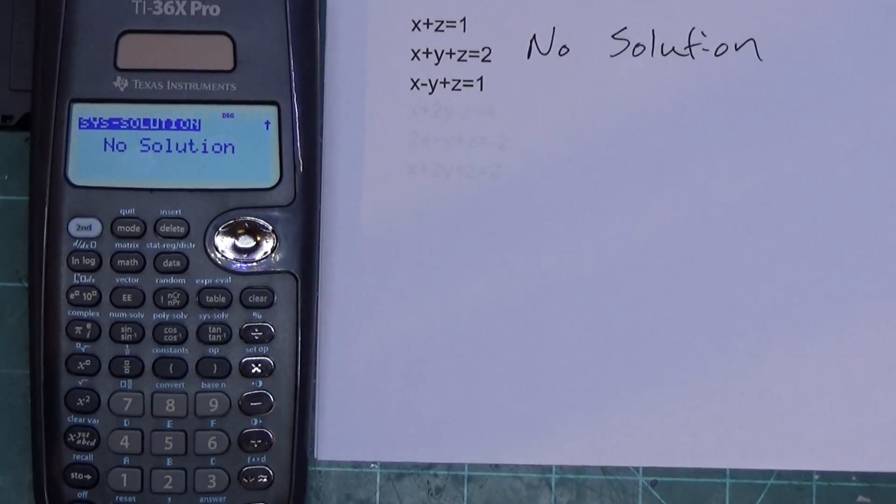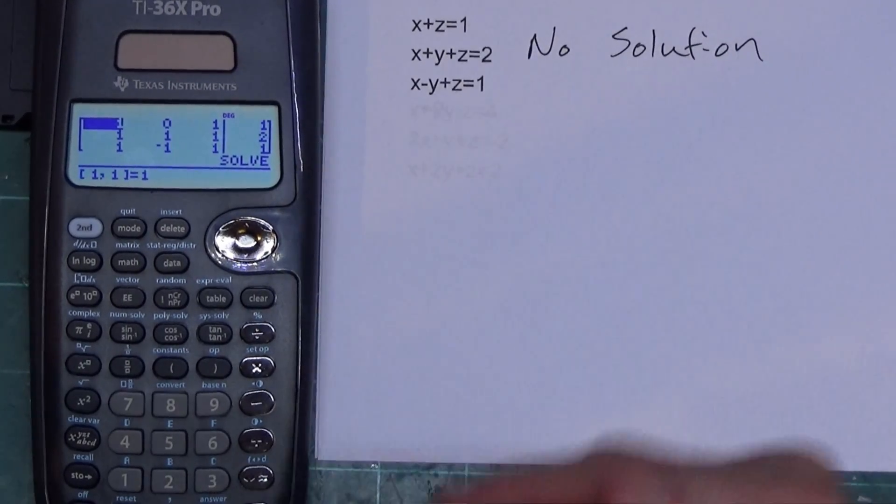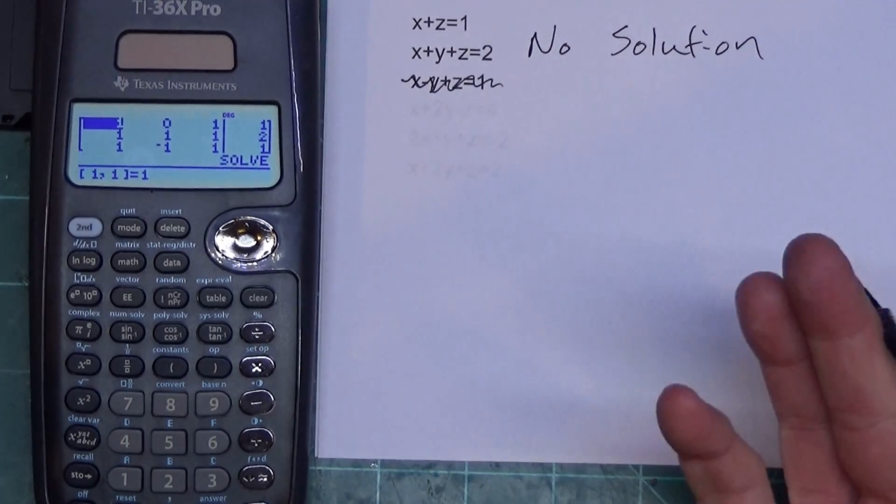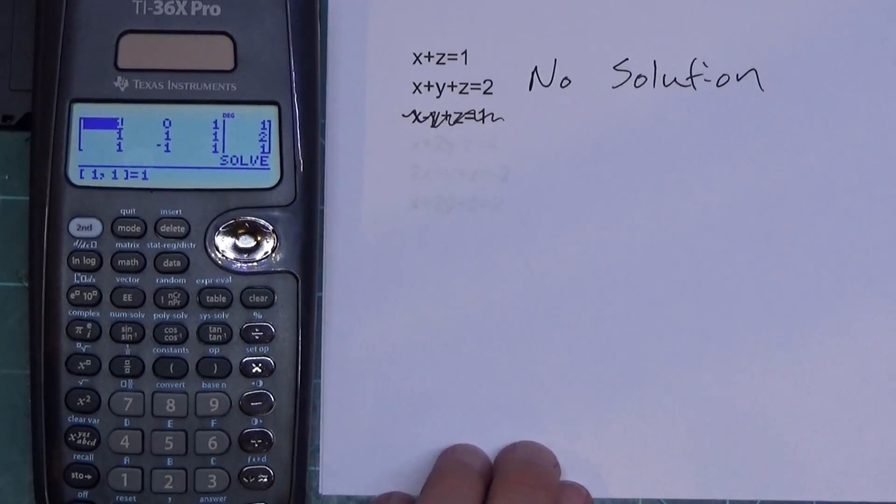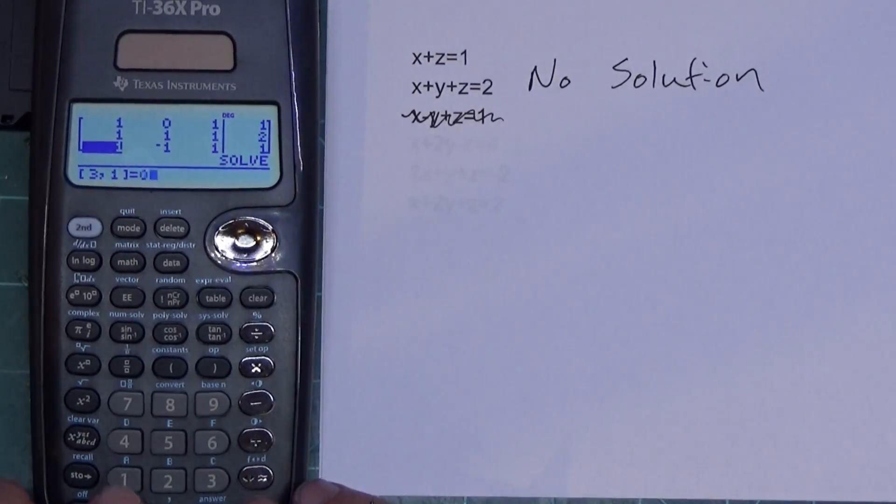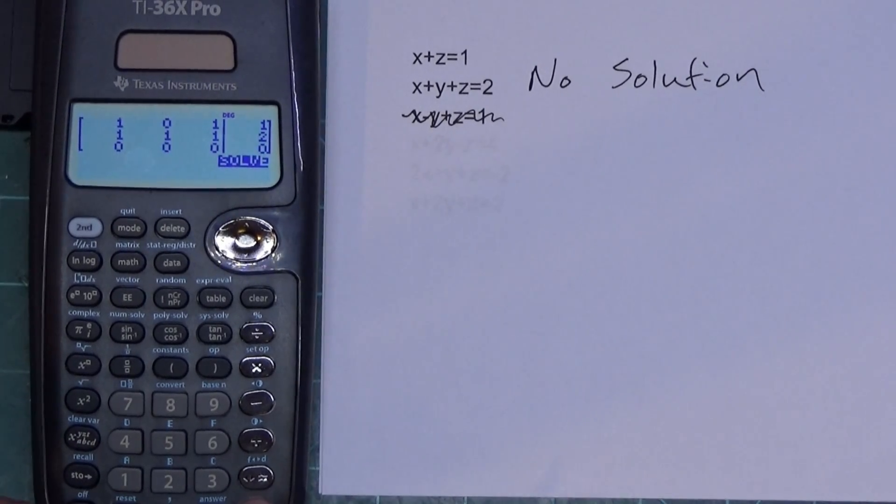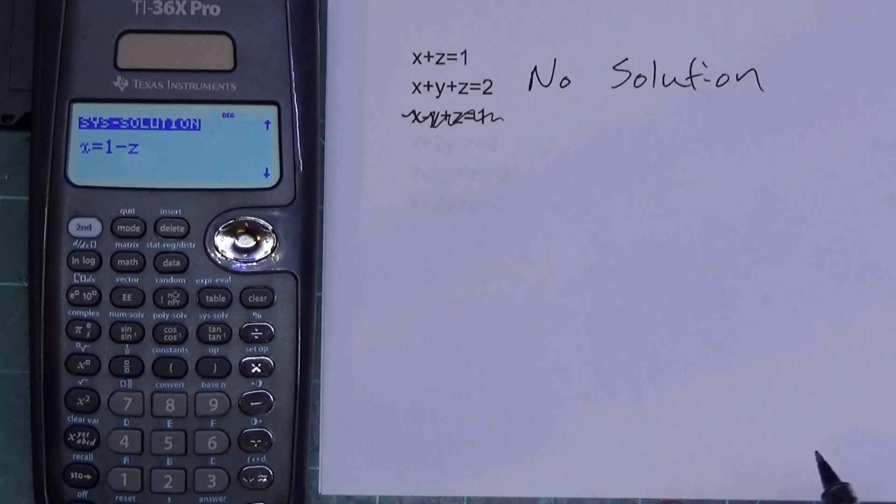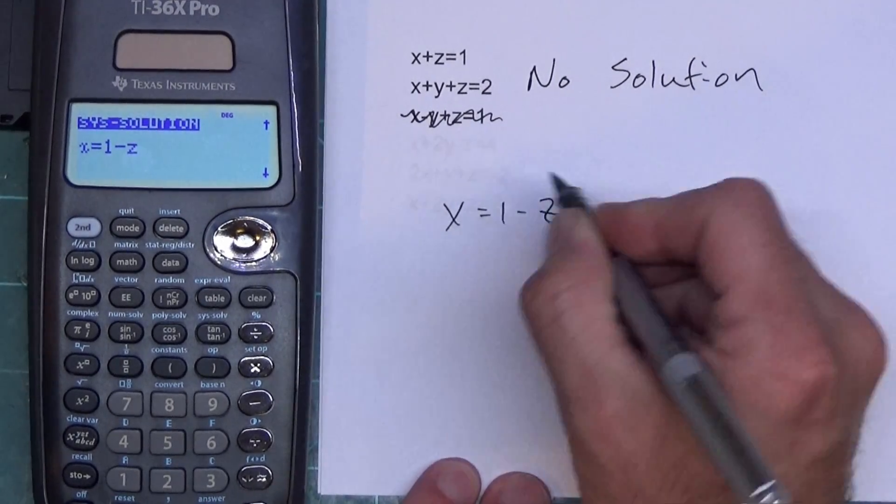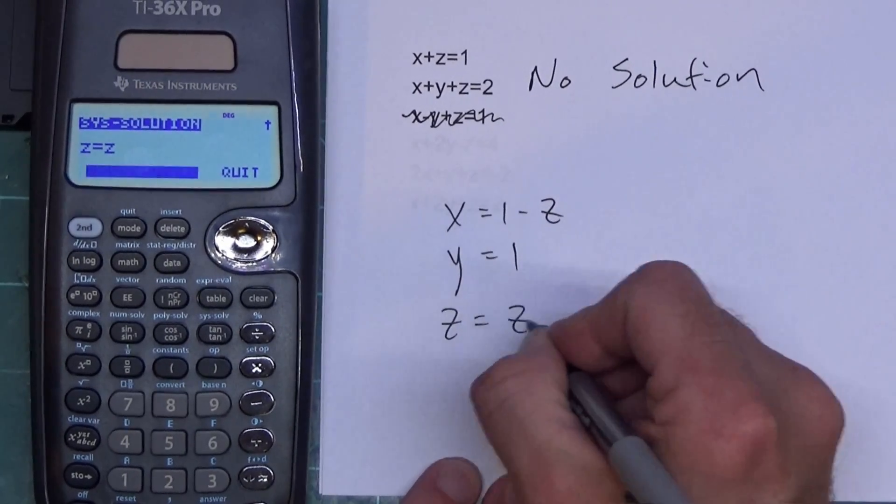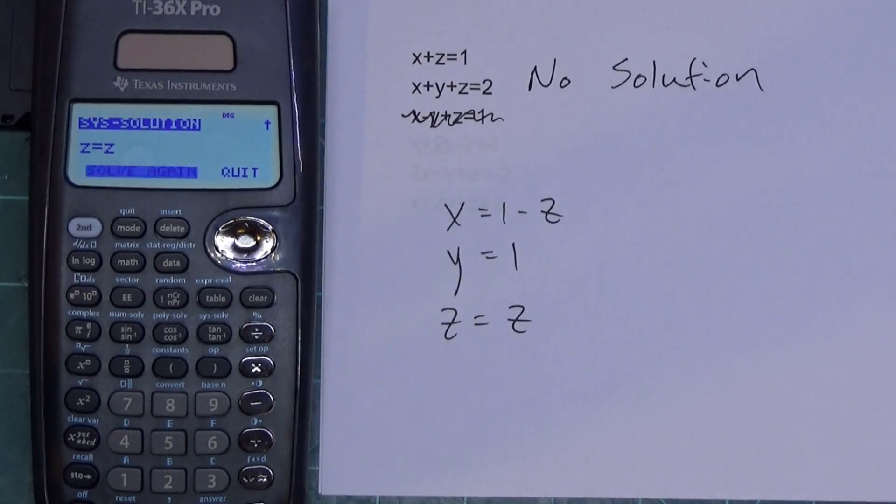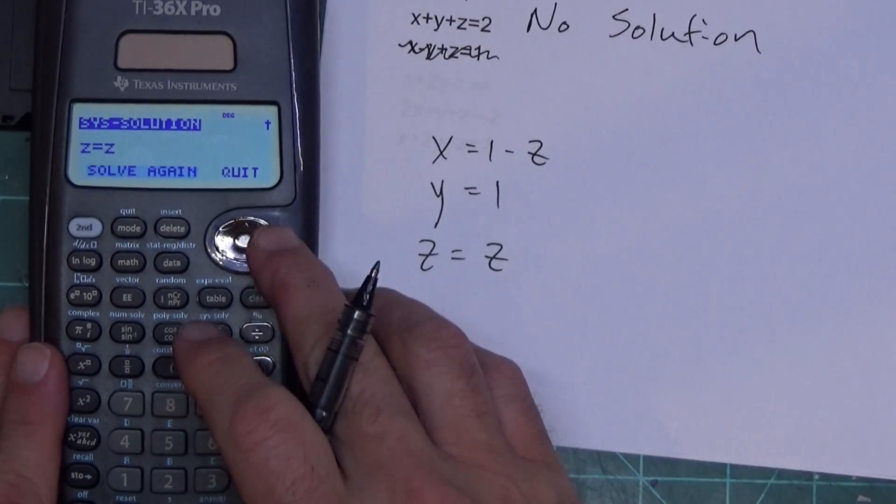I'm going to press enter, and it takes me right back to the solver. Now what happens if this bottom row was not there? Can this thing still solve it when we're missing the bottom row? The answer is yes. I just go down to the bottom row, put 0, 0, 0, and 0, and hit solve. You're going to get a parametric solution this time. We're going to get X equals 1 minus Z, you're going to get Y equals 1, and then you're going to get Z equals Z. And again, if you've just got two equations with three variables, it can still do it.